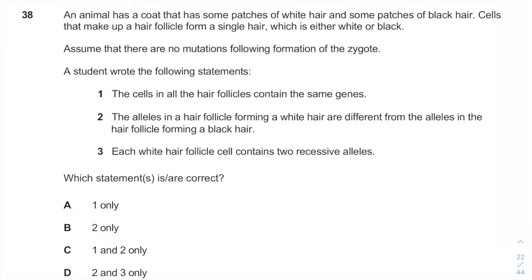So you might have, for example, two different alleles but only one allele will be expressed in every cell due to the formation of bar bodies from the X chromosomes of the females. Cells that make up hair follicle form a single hair. It means one hair, one cell, one hair which is either white or black. It means it's either expressing the white allele or either expressing the black allele.